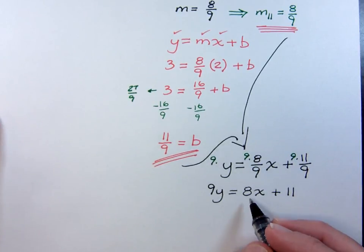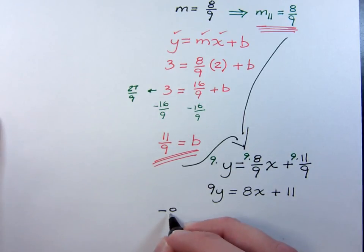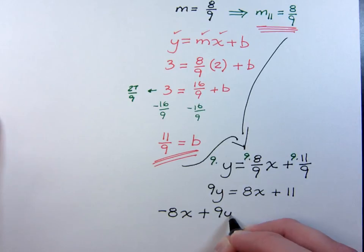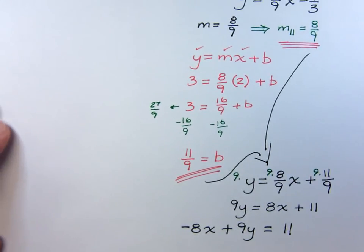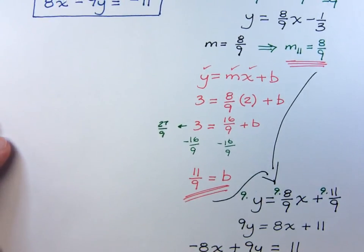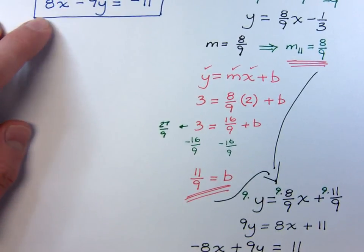Move the 8x term to the left side, so we have negative 8x plus 9y equals 11. And again, you may say, wait a minute, that does not exactly match up with what I had the first time. Well, yes and no.